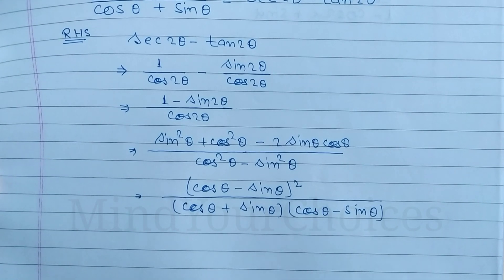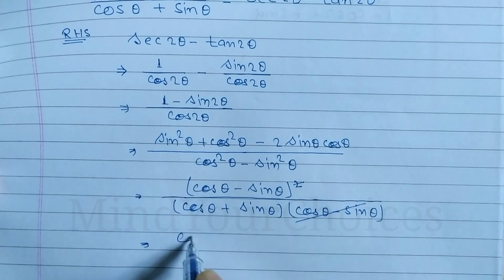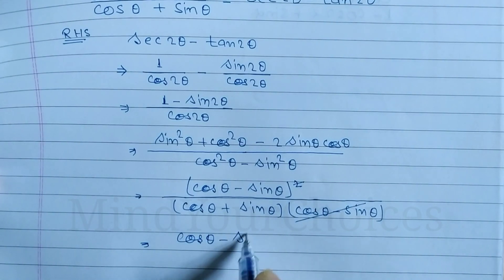We can cancel the cos theta minus sin theta term. What remains is cos theta minus sin theta divided by cos theta plus sin theta.